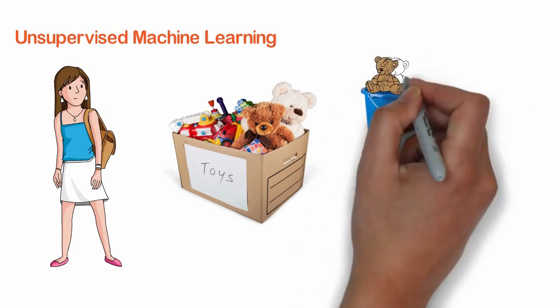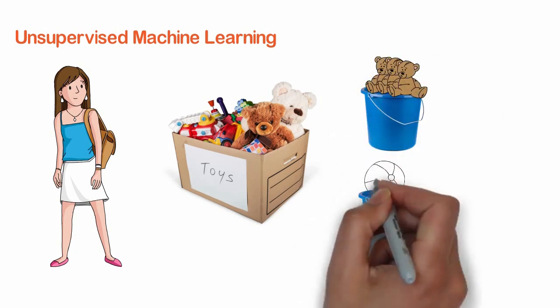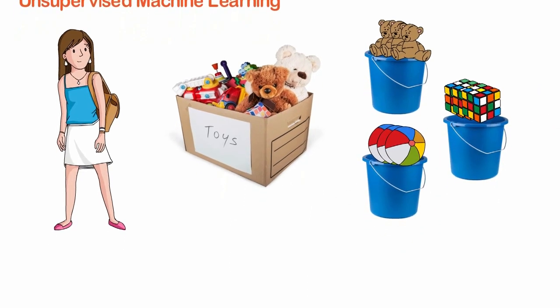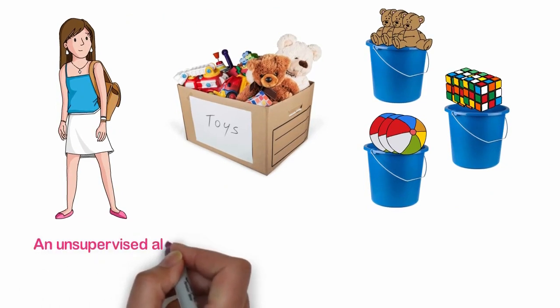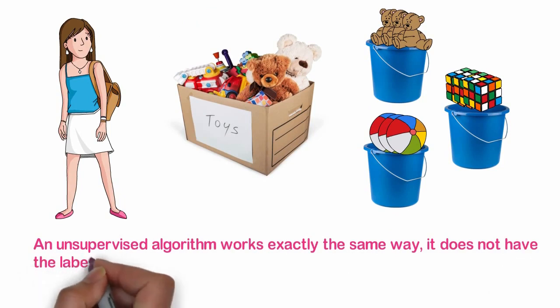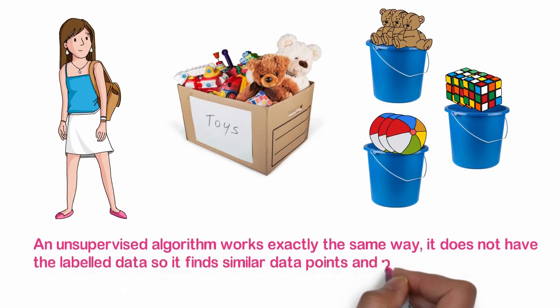Mia is a smart kid. She segregates the toys on the basis of shape and puts similar toys together. An Unsupervised Algorithm works exactly the same way. It does not have labeled data, so it finds similar data points and puts them together.